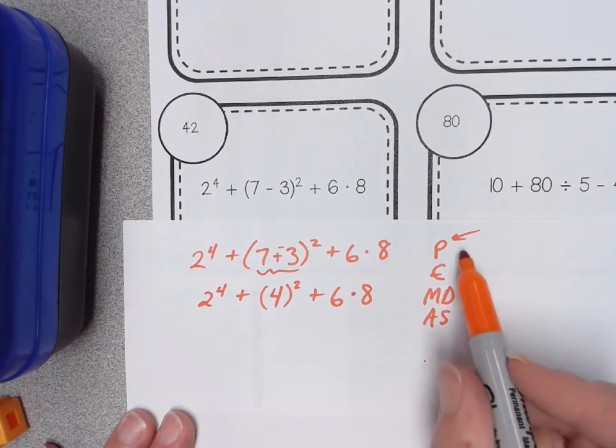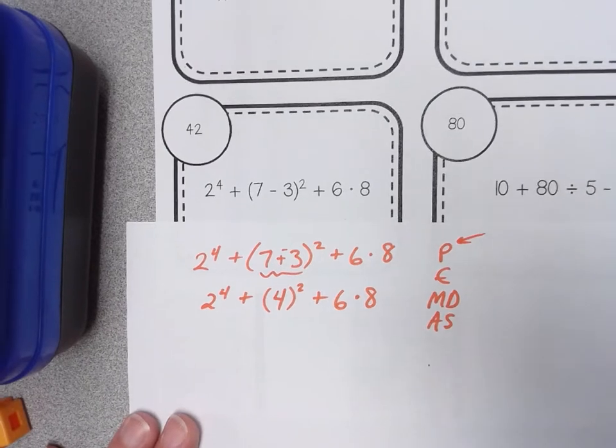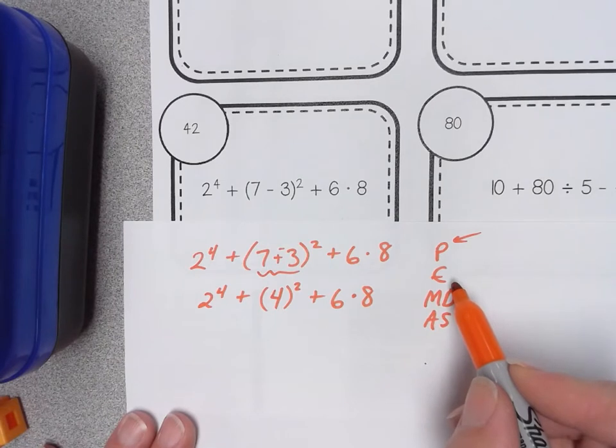Next my parentheses have really been taken care of. I guess maybe I didn't need them there. There's nothing preceding the parentheses so this might have been enough just to show 4 to the second power but what should I try next? I should probably look at exponents right?